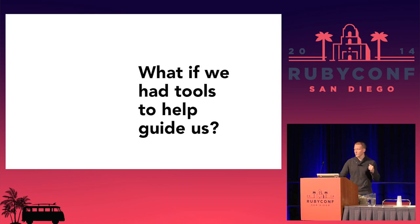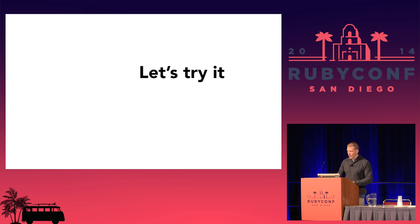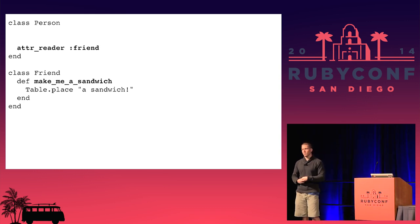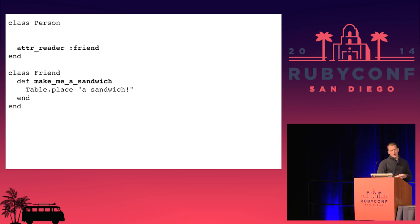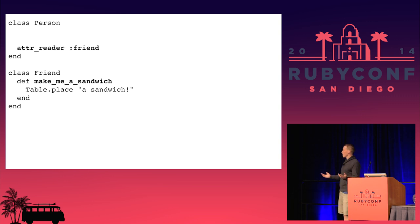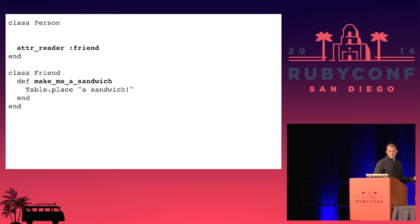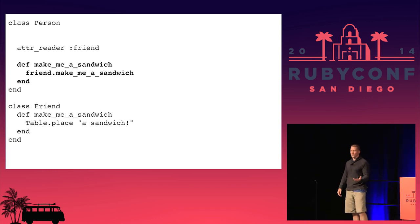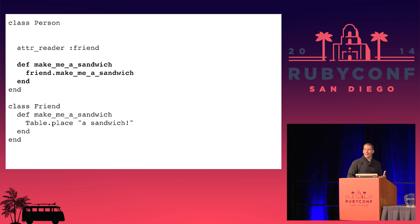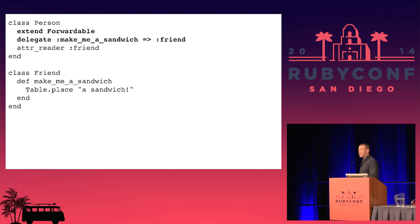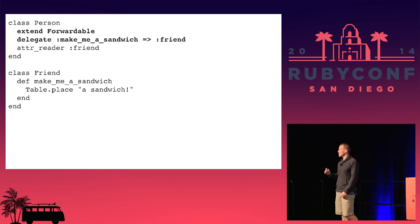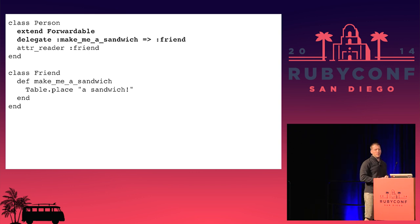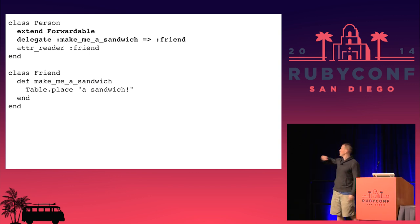I love making tools that give me and my team guiding principles so it's easy to do what we want to do. So what if we had a tool to help guide us? Let's try it. Say we've got a person, a person has a friend, and I want to be able to tell that friend to make me a sandwich — sudo not required. We just define a method make_me_a_sandwich that goes and tells the friend to make me a sandwich. I like to use Forwardable — it hides the mumbo-jumbo of setting up methods and just shows: all of these things you specify, I'm going to send on to friend.